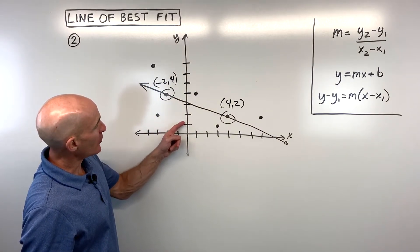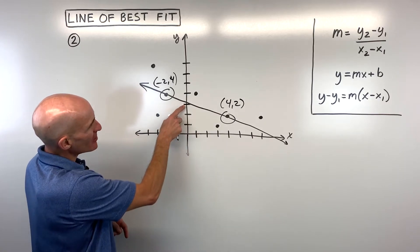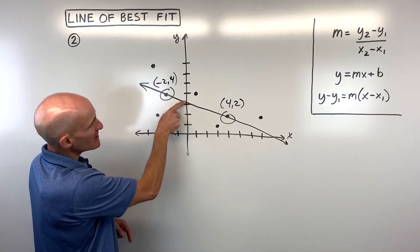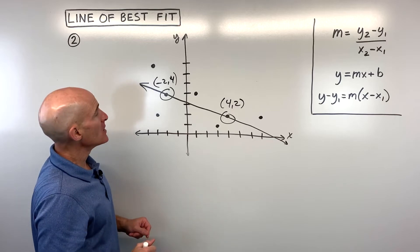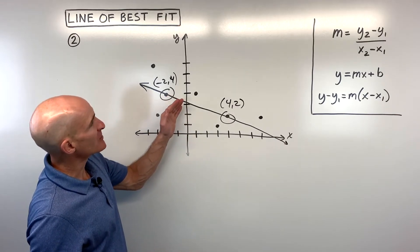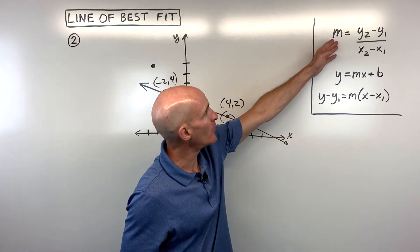So we're going to use those two points to find our slope and then find the y-intercept. Now, you might be saying, well, Mario, we already know the y-intercept, but you can see it's hard to tell. Is this going exactly through 3? Is it a little bit above or a little bit below? So let's just go through the steps.